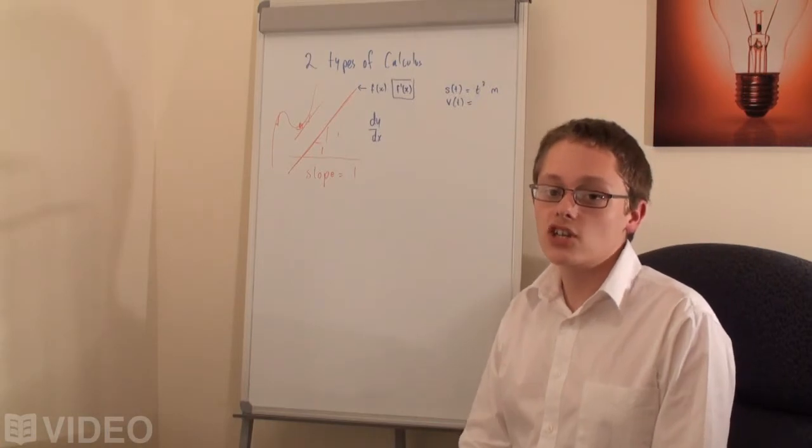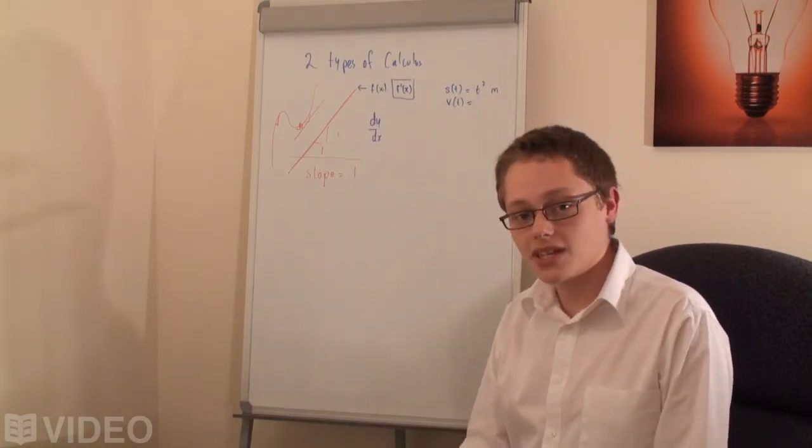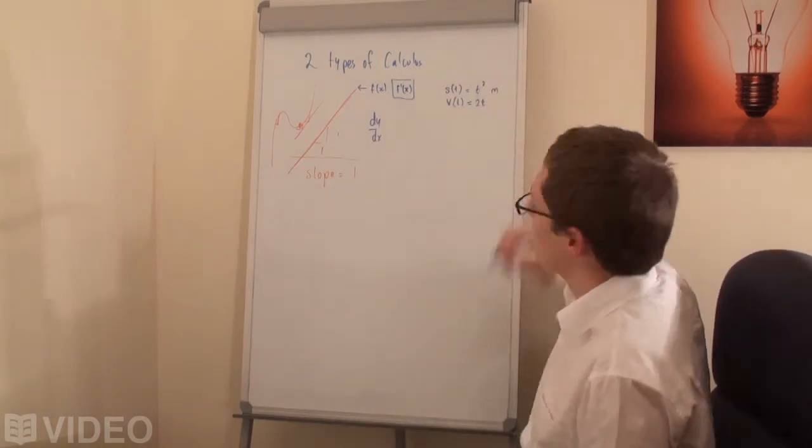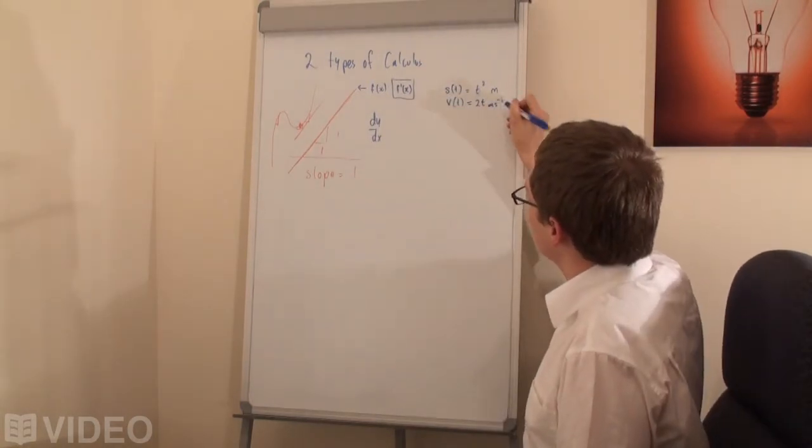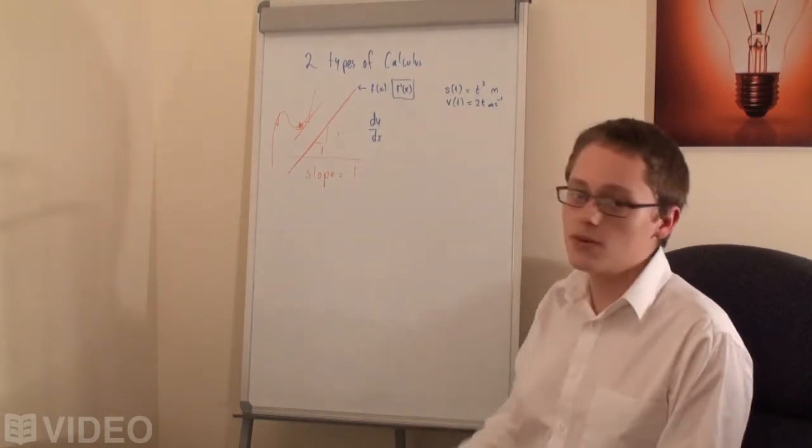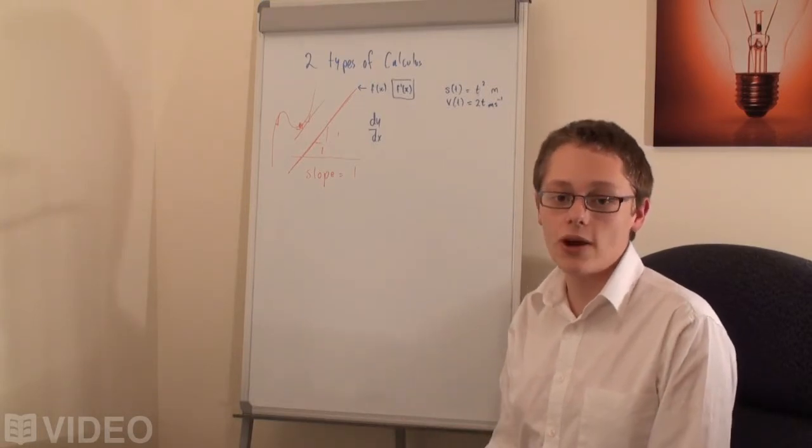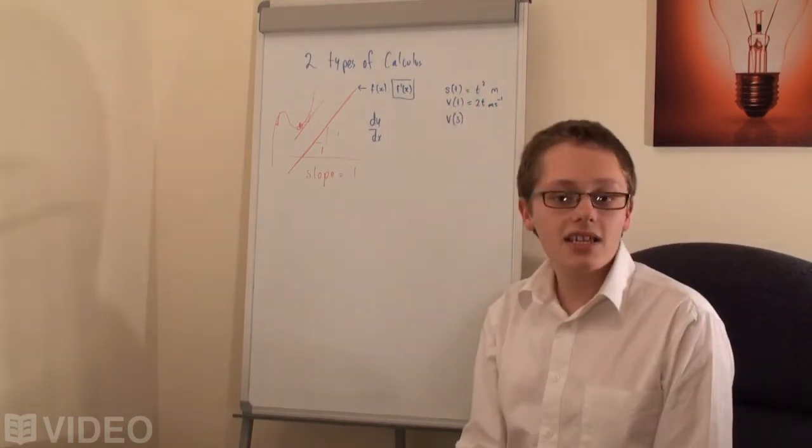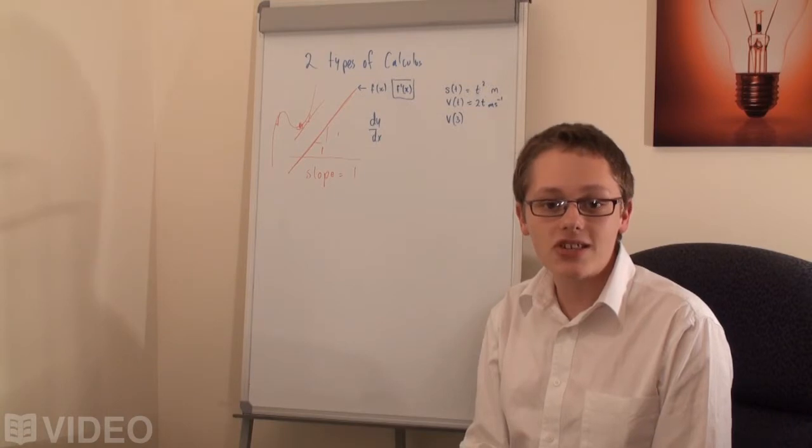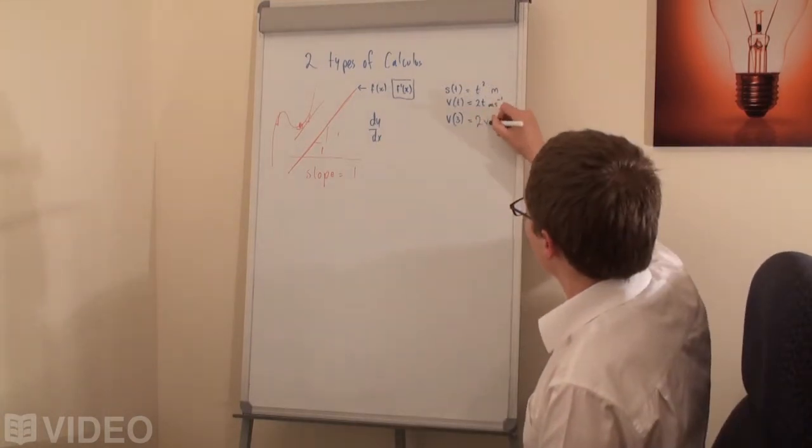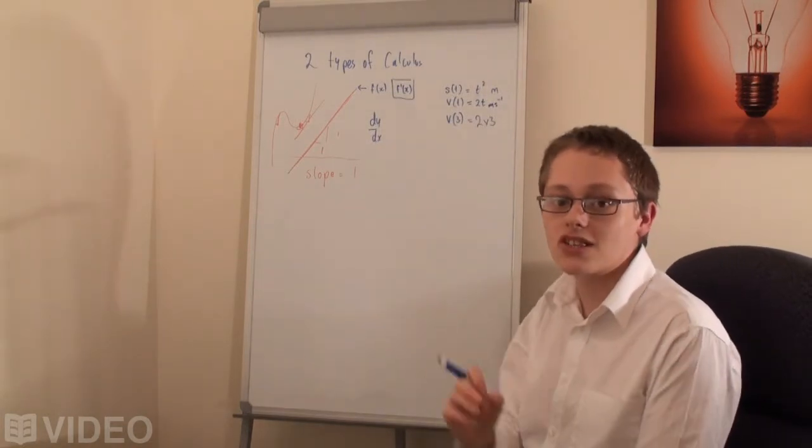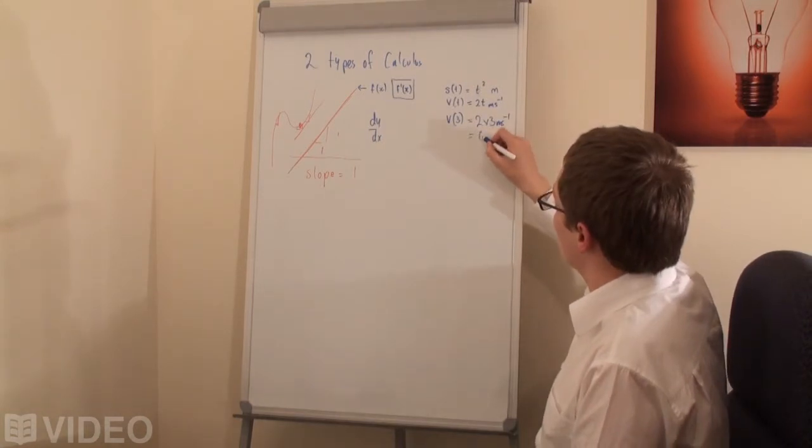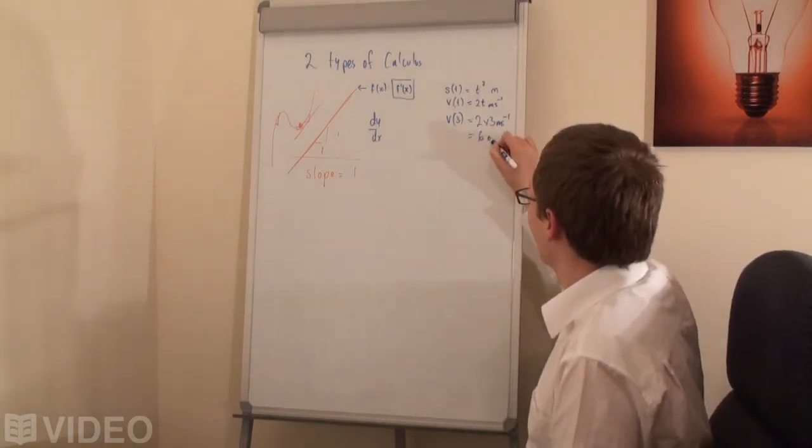In the future, you'll be able to differentiate this function, thanks to these videos. But today, I'll differentiate it for you. And we get 2t meters per second. I presume that we're just going to work with seconds here for this question. And as a result, we can find the v of 3, the velocity at 3 seconds. It equals 2 times 3, because we just substitute 3 for t, meters per second, which is, of course, 6 meters per second.